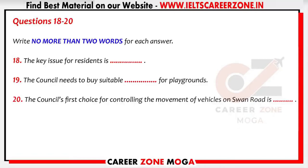The council's preference would be to install traffic lights either side of the pedestrian crossing, but they'll consider other options to alleviate traffic problems, like diverting non-essential vehicles to a back road. Are there any questions? That is the end of Part 2.